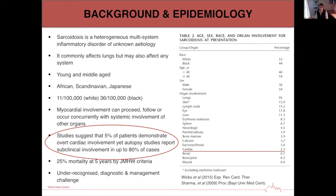The lack of a precise and consistent case definition, variable methods of case ascertainment, and variability of disease presentation and progression all lead to under-recognition of this condition and often its misdiagnosis. Furthermore, the lack of a sensitive and specific diagnostic test in detecting preclinical stages of disease, or those at risk, remains a significant challenge.